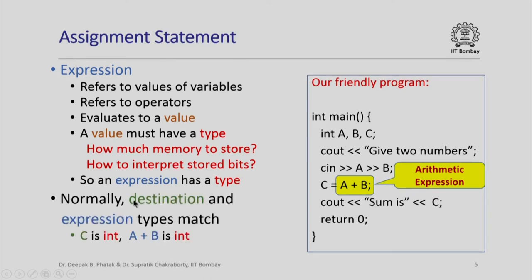Normally the destination of an assignment statement — for example C — and the type of the expression on the right-hand side will match. For example, here C is of type int, and the type of the expression A plus B will also be int, as we will shortly see. So normally the type of the destination and the type of the expression are going to match.